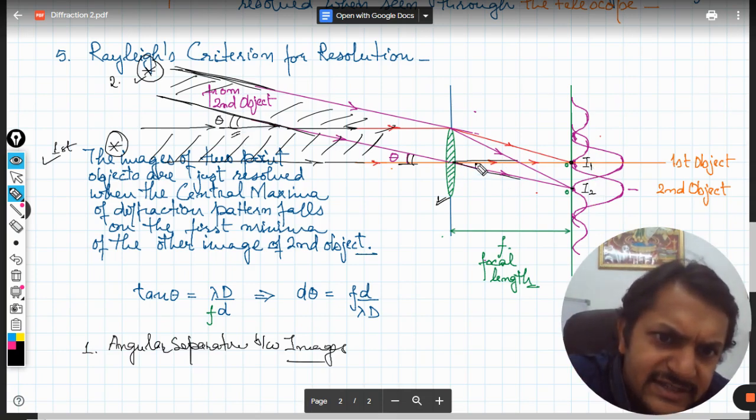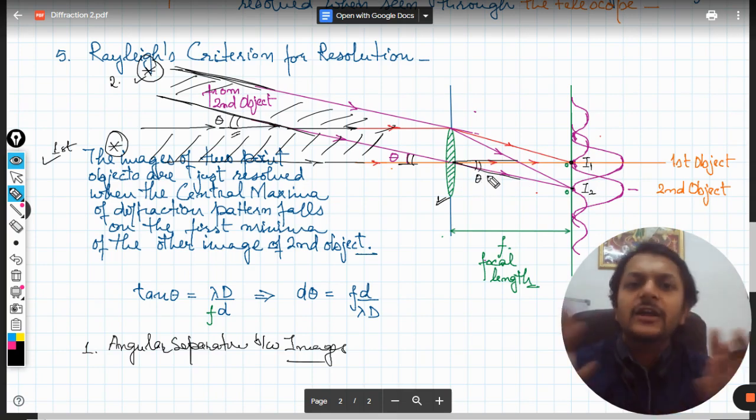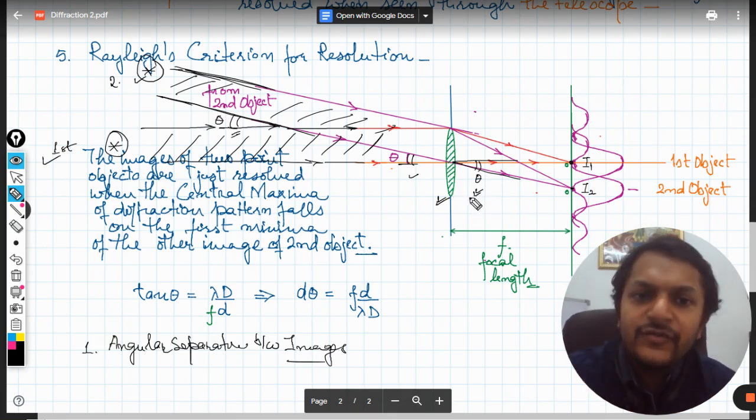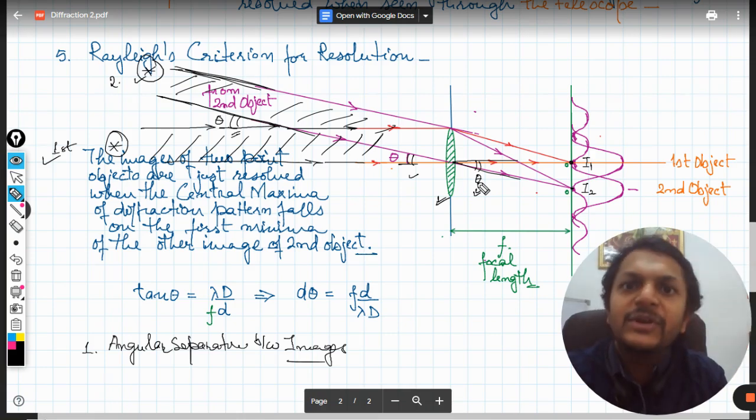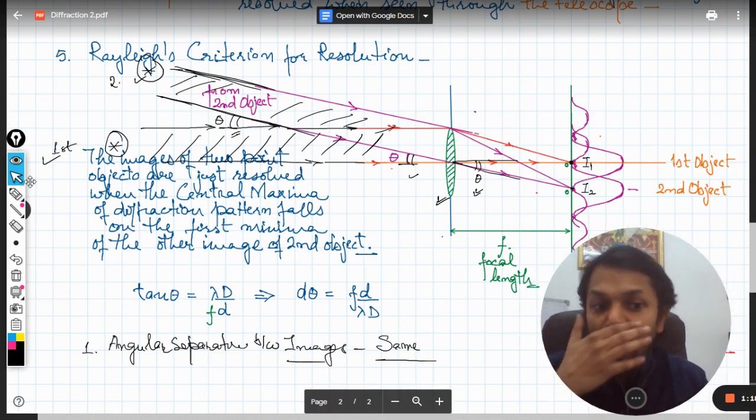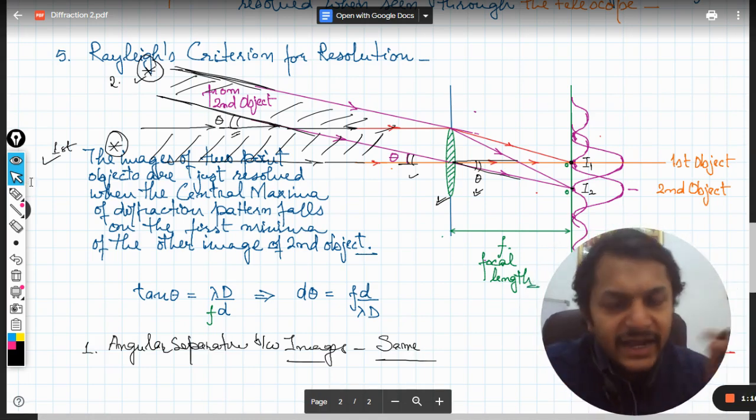Now you can see that this angle and this angle are vertically opposite angles, so definitely they will be equal to each other. So this angle we do not control. You cannot change the angle between the two images. This anyhow you can't do that. So that is why the angular separation will remain same. Now this is the first thing.